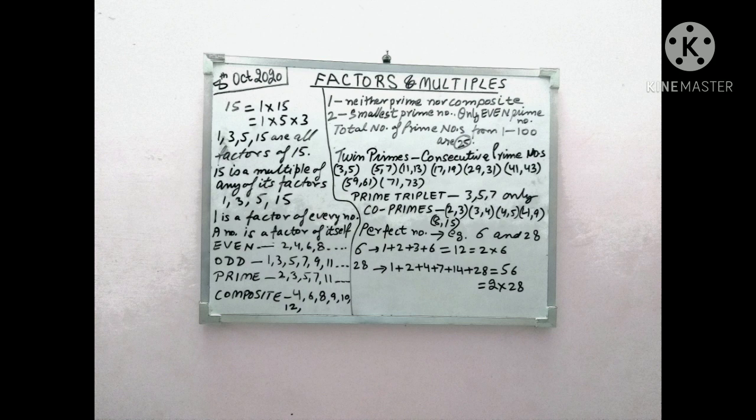And this 15 is a multiple of any of its factors, that is 1, 3, 5 and 15. We can easily say, simply say that multiple means that number which comes in the table of any other number. So we can generalize that 1 is a factor of every number. And every number is a factor of itself also. Because 15 for example above, it is also divisible by 15.